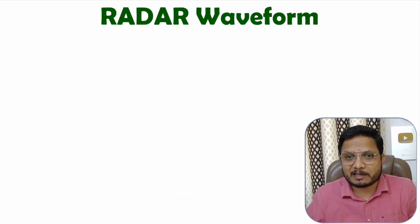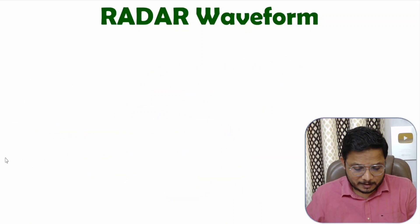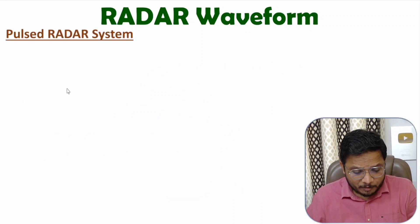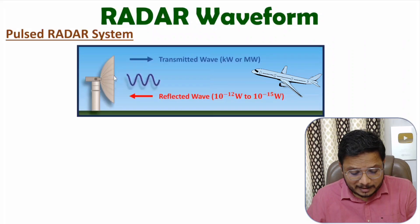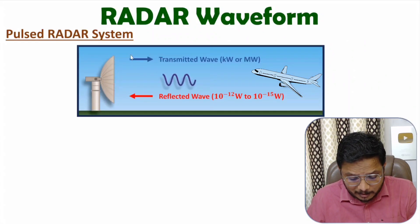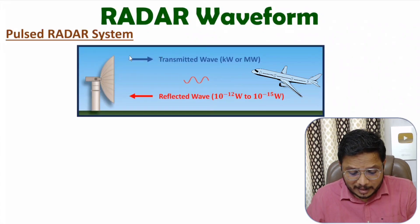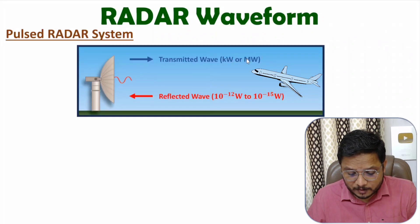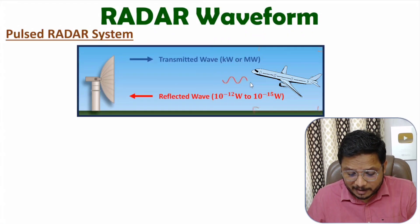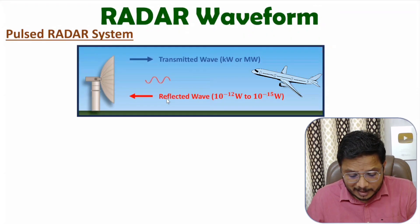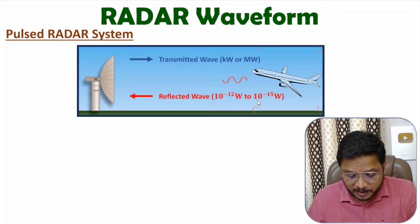Let me show it to you by animation. Here we have a pulsed radar system that is transmitting a high power signal. That signal could be in the range of a few kilowatts to megawatts. And from the target, shown by red color, you can observe the reflected echo signal.